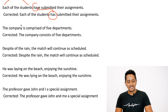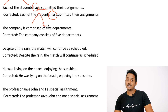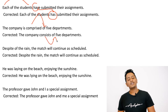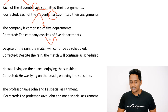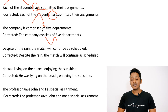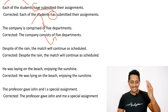Second: the company is comprised of — you never say 'comprised of'. You say it comprises, or you can say 'consists of'. Remember this: it comprises, or consists of. You never say 'is comprised of'. The company consists of, or the company comprises, five departments.